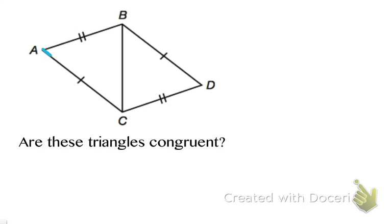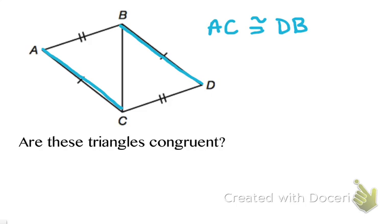Side AC has a single slash mark, and side DB also has a single slash mark, so those two sides are equal in length — side AC is congruent to side DB. Next, side AB has a double slash mark, and so does side DC. Because they have matching slash marks, I can tell they are equal in length. So AB is congruent to DC.